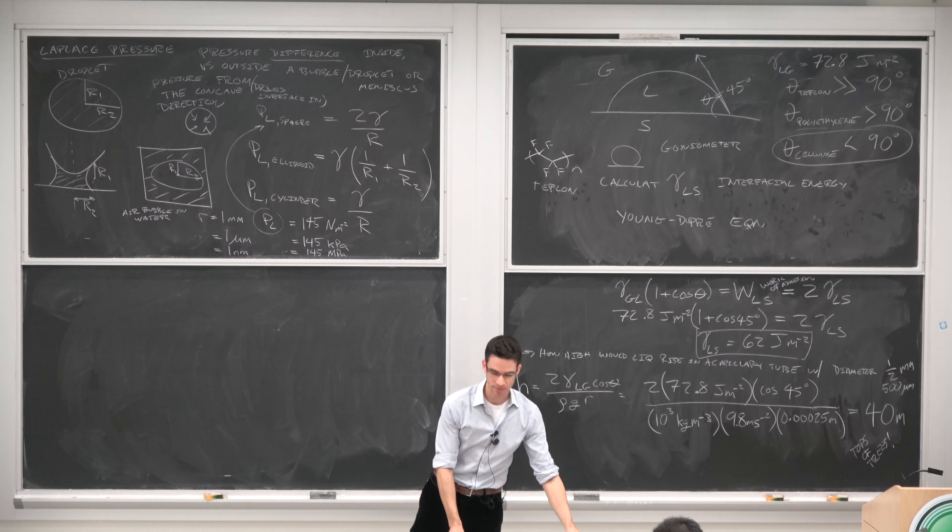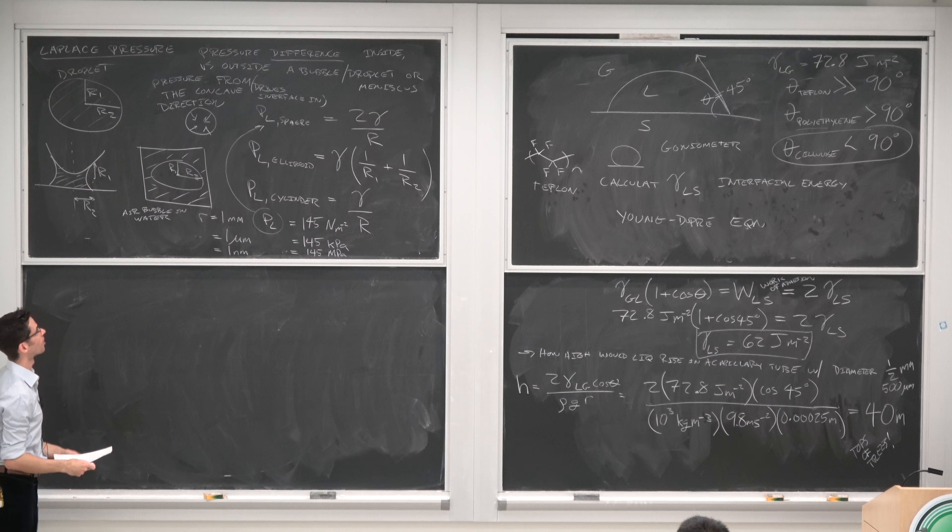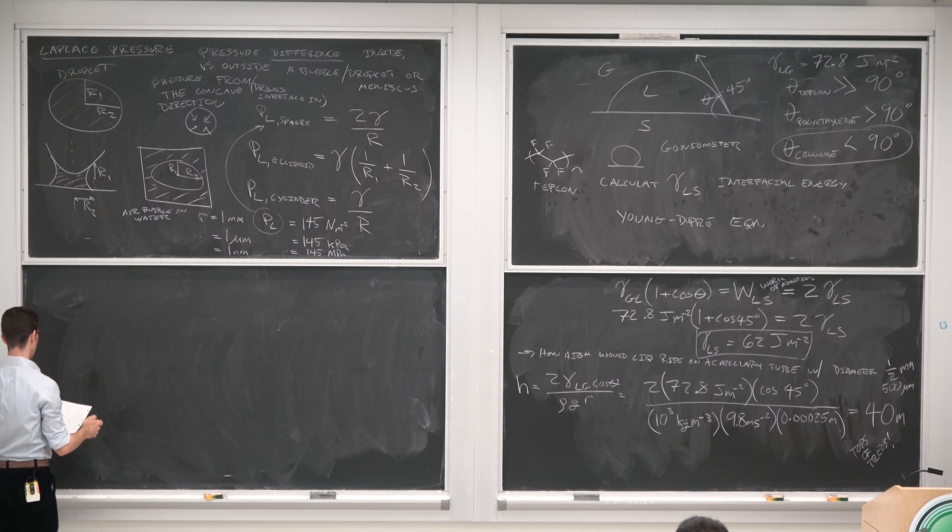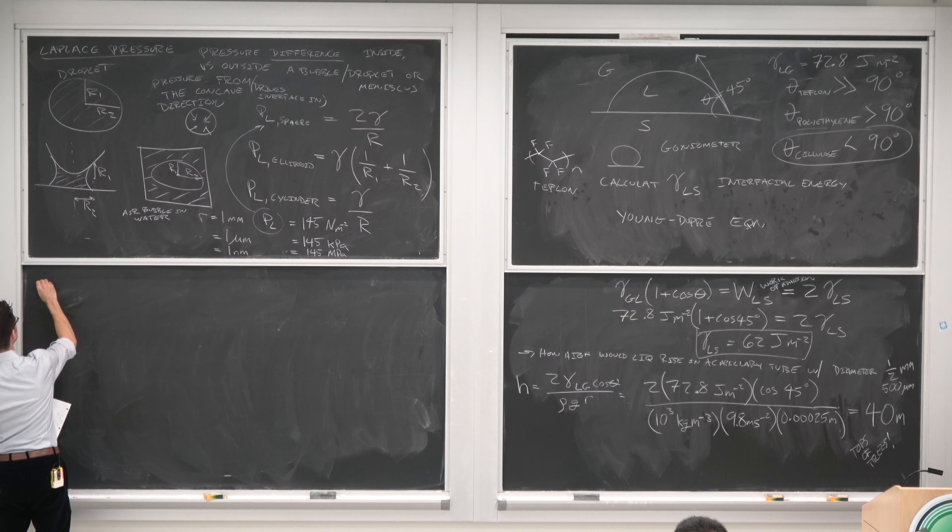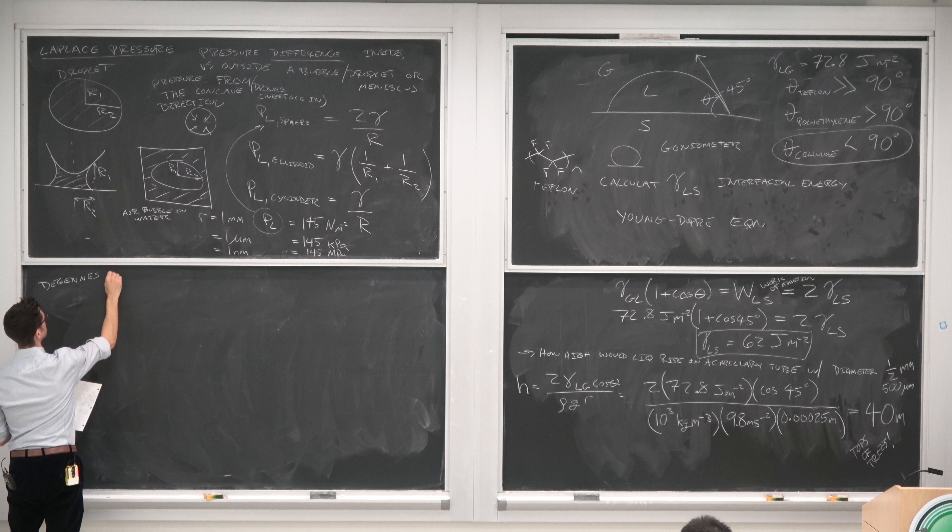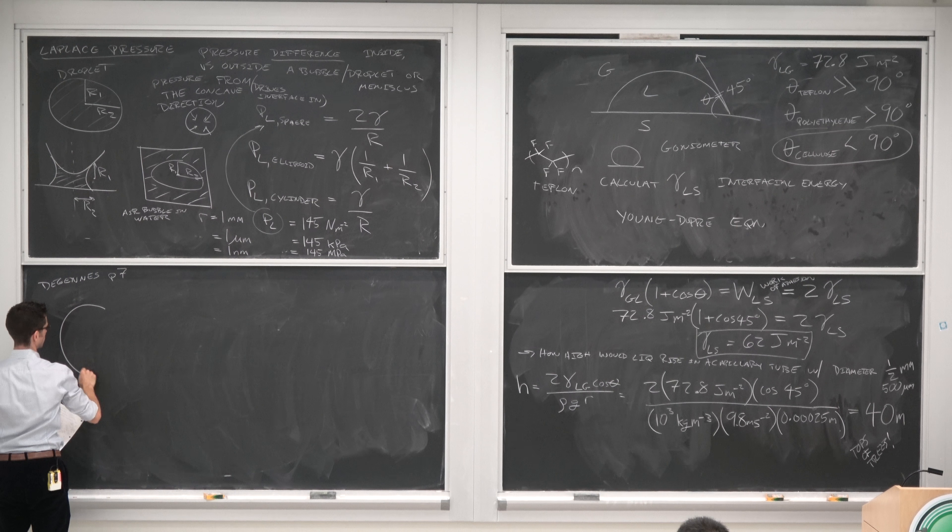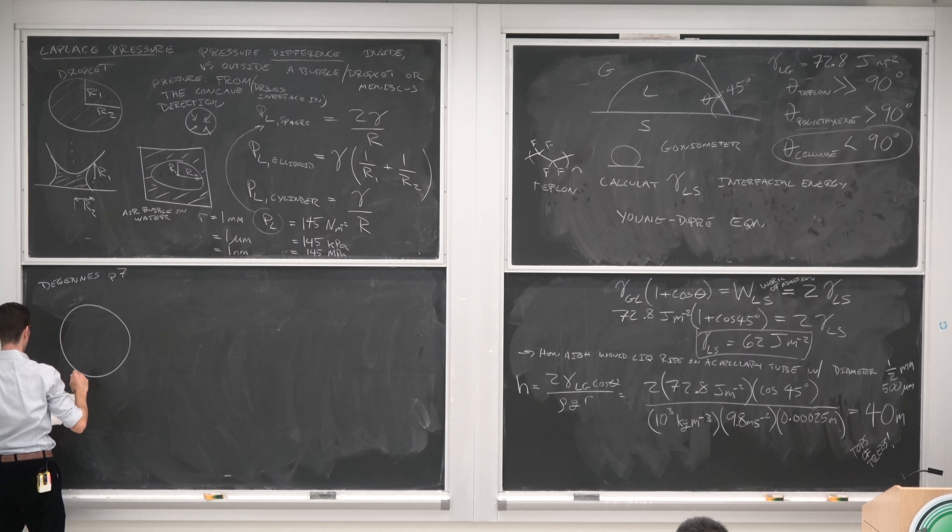Where did the Laplace pressure come from? We have this 2 gamma over R, that's pretty simple. Well, this is in de Gennes, page 7. His explanation of this is less hand-wavy than Israelachvili, so we're going to go with it.